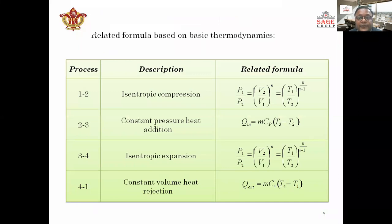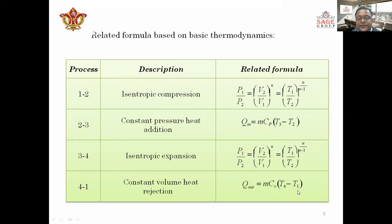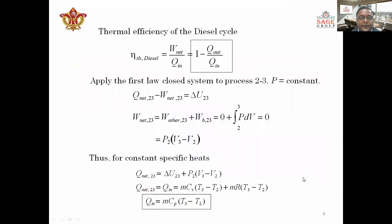These are the related formulas based on basic thermodynamics. For process 1 to 2, isentropic compression, the standard isentropic formula applies. For process 2 to 3, constant pressure heat addition, the heat supplied is Q_in = mCp(T3 - T2). For process 3 to 4, isentropic expansion, the isentropic formula applies. For process 4 to 1, constant volume heat rejection, Q_out = mCv(T4 - T1). The thermal efficiency of the diesel cycle is defined as W_net divided by heat supplied, equal to 1 minus Q_out over Q_in, where net work done equals heat supplied minus heat rejected.